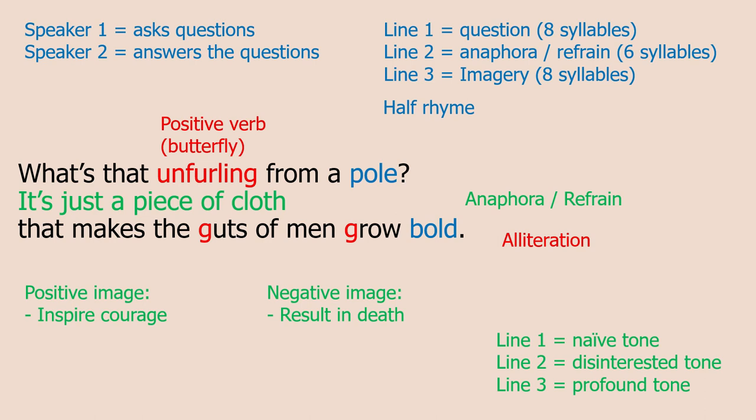Moving to stanza two — structurally it's the same, the only difference being that pole and bold form a half rhyme rather than a full rhyme in lines one and three. Again, the tone is consistent across lines one, two and three. Line one — "What's that unfurling from a pole?" — uses the positive verb unfurling, which reminds me of a caterpillar becoming a chrysalis and then unfurling into a butterfly. Flags can be very beautiful. But there is a warning that if you look deeper, flags can be dangerous. Speaker two answers with "it's just a piece of cloth" — the anaphora creating a disinterested tone.